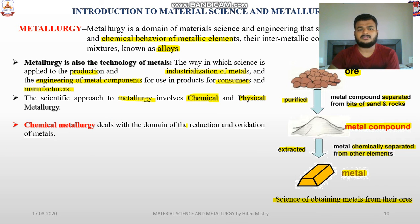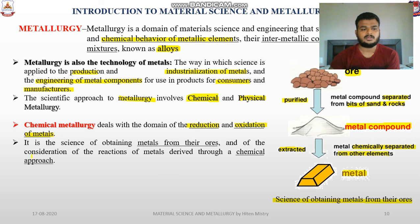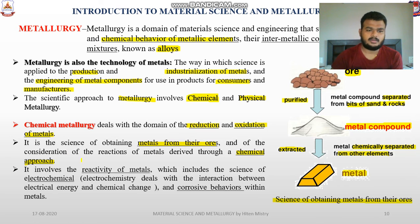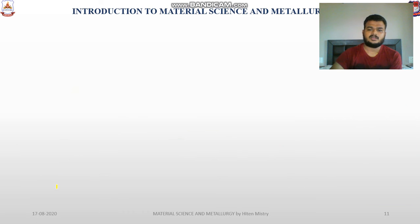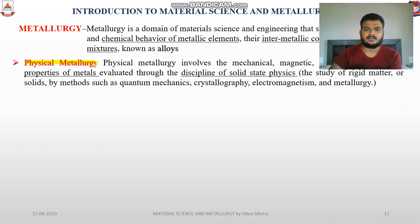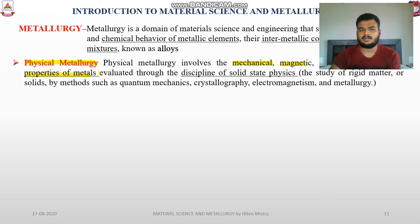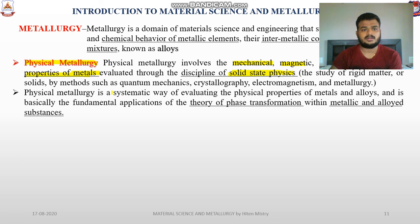Chemical metallurgy deals with the reduction and oxidation of metals — how metals are oxidized, and it is the science of obtaining metal from ore. It involves the reactivity of metals, electrochemical behavior, and corrosion behavior of metals. Physical metallurgy includes various properties such as mechanical, magnetic, electrical, and thermal properties of metals in a solid physical state. Physical metallurgy is a systematic way of evaluating the physical properties of metals and alloys and their fundamental applications.